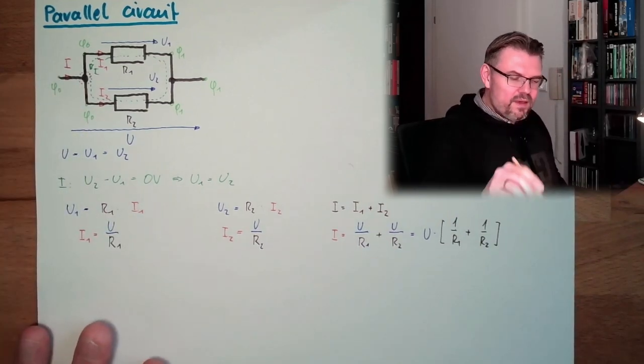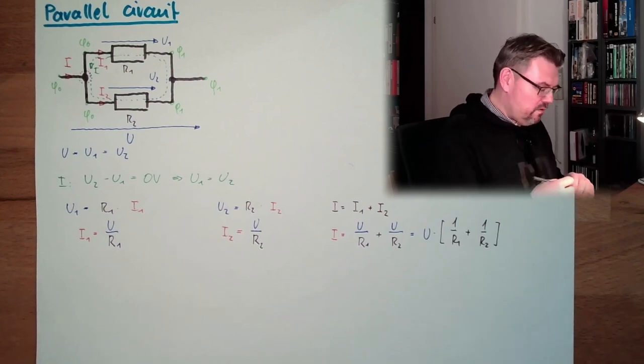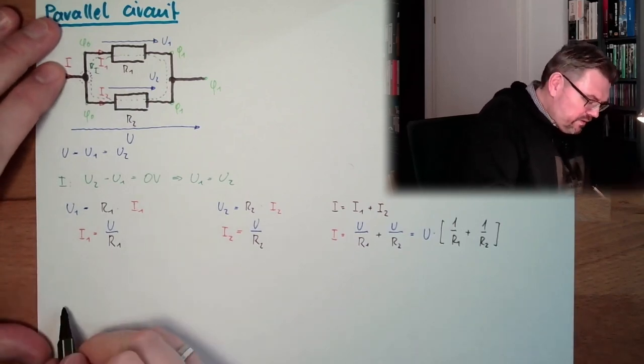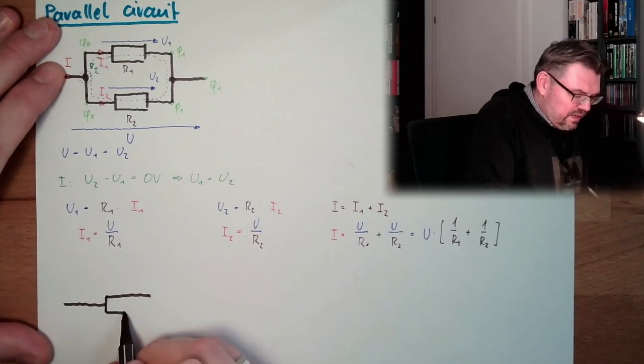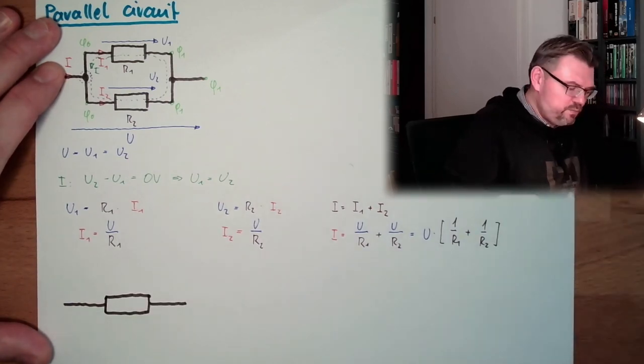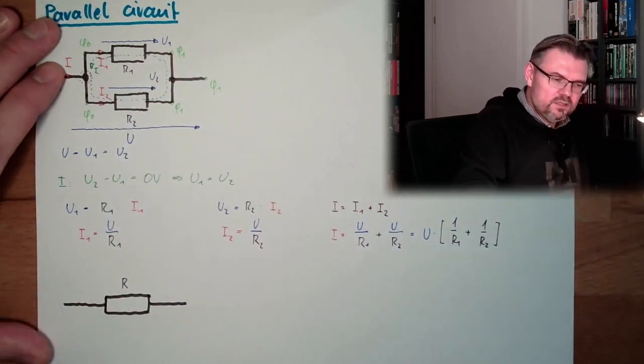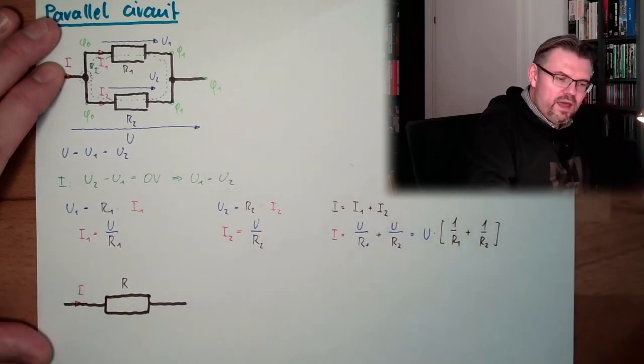And if we think about Ohm's law now, let's say we want to have, like we did it in the series connection, we want to have a circuit, a specific resistance R, which behaves exactly the way as the parallel circuit here. So we have here I and we have here U.